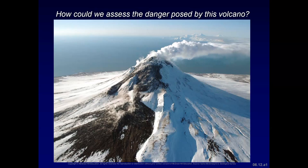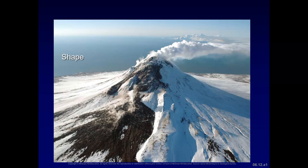Looking at this volcano — the Augustine Volcano in Alaska — how could we assess the danger it poses? We can look at the shape: steep slopes are more dangerous than gentle slopes. We look at rock types as well — if you see welded tuffs, pyroclastic flows, rhyolite, or andesite, that suggests the volcano is quite dangerous compared to mafic rocks such as basalt. The age is also important: we want to see how much it's eroded and date the rocks to indicate the age of the last eruption. Maybe it's dormant with no longer a magma chamber.